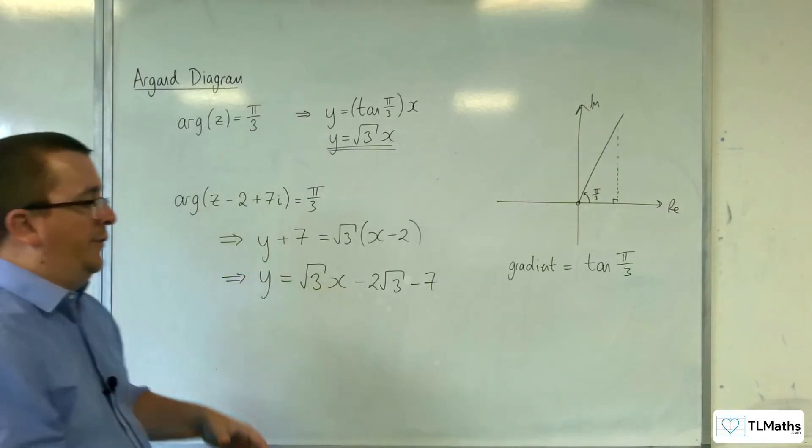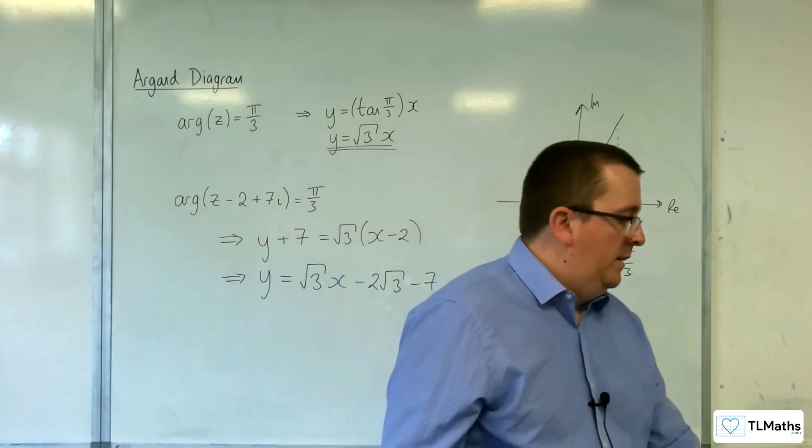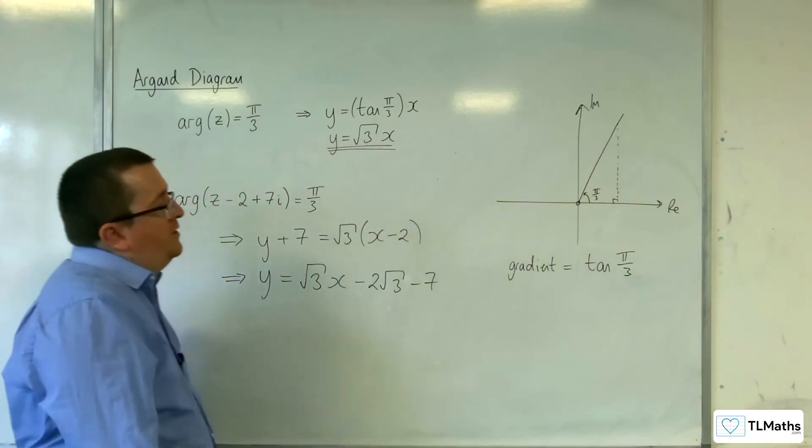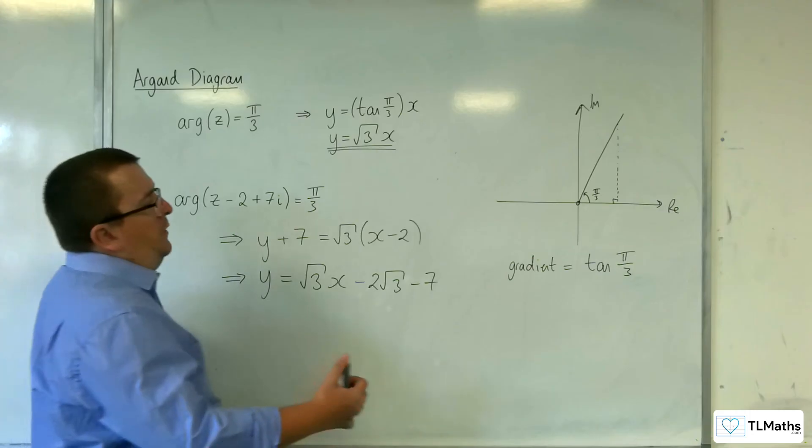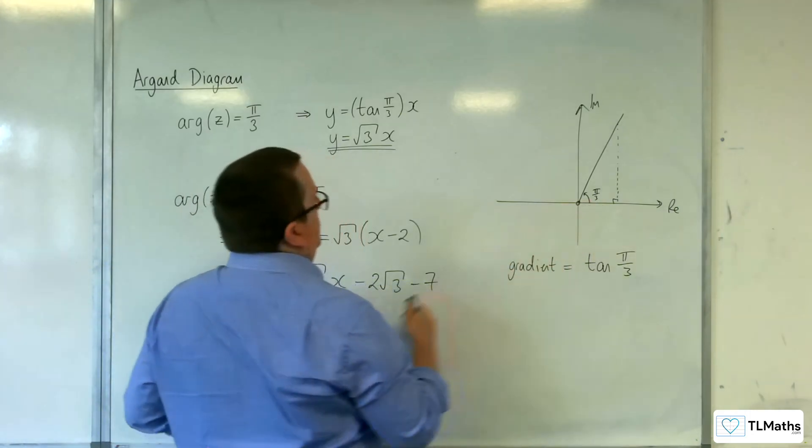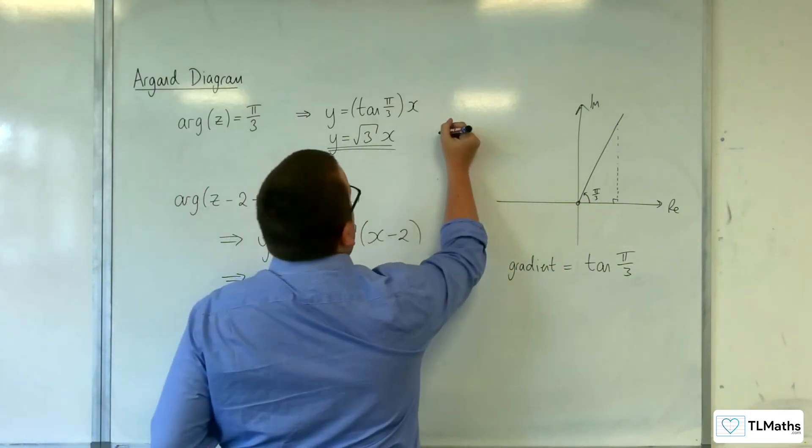Now obviously, because it's a half line, that means that the domain is restricted. So for this one, you'd be saying x is greater than 0.